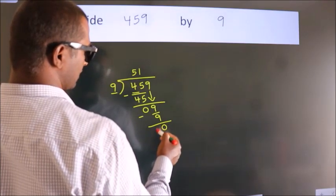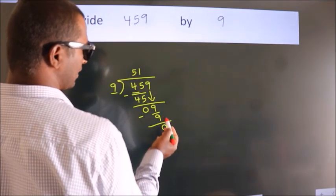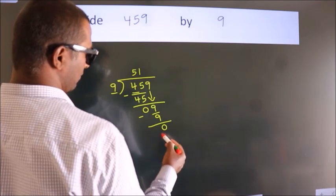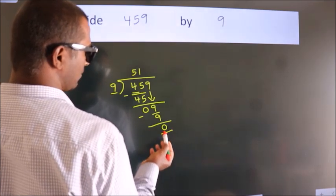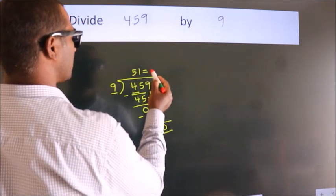After this, no more numbers to bring down and we got remainder zero. So this is our quotient.